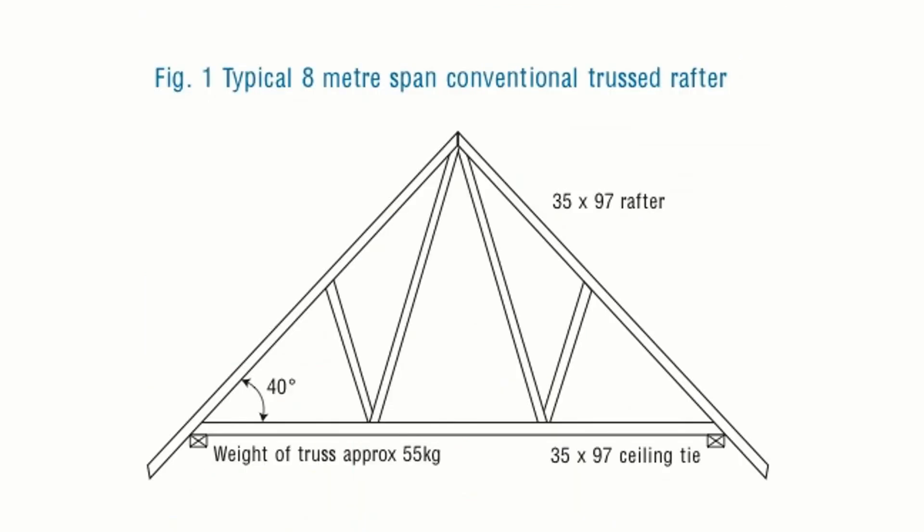So if we took a truss for a typical 8-meter span, and by 8-meter span I mean spanning from those two supports across that distance there, that would be our 8 meters. And because it's working as a system, we can actually use relatively light timbers, we can use a rafter, which is 35 by 97, so that's 35 millimeters thick by 97 millimeters deep, and the ceiling tie is the same size. And this results in quite a light frame, so it's 55 kilograms, it's probably capable of being lifted into place or manoeuvred into place by two men.